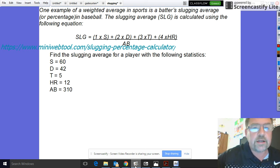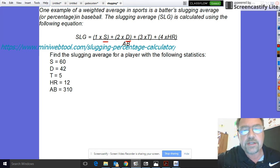Here's another weighted average called slugging average or slugging percentage. It's a pretty simple formula that basically includes the singles that a baseball player gets, the doubles, the triples, and home runs.